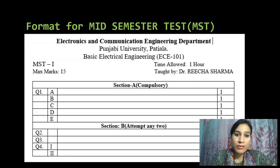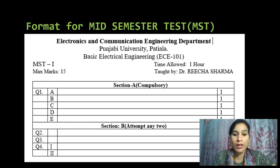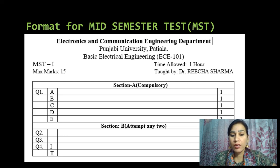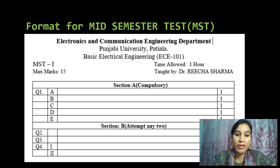This is the format for the mid-semester test. In the university pattern, we are having two MSTs and the pattern is same for MST 1 and MST 2. In this, we are having two sections: Section A and Section B. Section A is compulsory, which consists of five questions of one mark each. Section B is having three questions, out of which two questions have to be attempted by the student and they are of five marks each. They can be divided into sub-parts of 2.5 marks. So, this is the pattern.